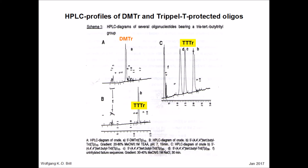HPLC profiles of DMT and triple-T protected oligos are shown on this slide. Under A, there is a tanmer which is 5'-dimethoxytritylated; B shows a triple-T protected tanmer of the same sequence. It is obvious that the greater hydrophobicity of the triple-T group facilitates trityl-on purification. On the right, we see a series of oligonucleotides with triple-T protection.